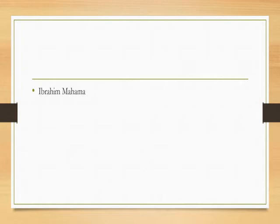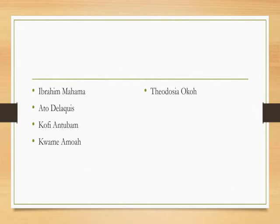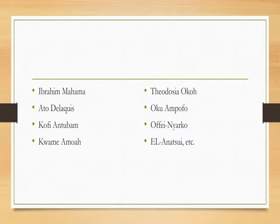The next persons include Ibrahim Mahama, Atul Delacruz, Kofi Antubam, Kwame Amwa, Theodosia Oko, Oku Ampofu, Ofei Nyakon, and E.L. Anachi, etc. They are all visual artists. We will talk about some of them in our next class. You can also search through the internet to get information on these visual artists shown on the screen.